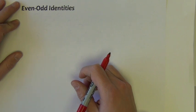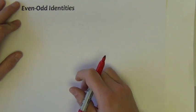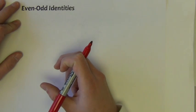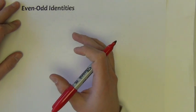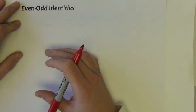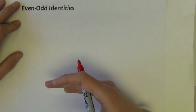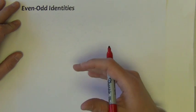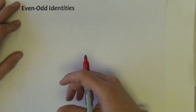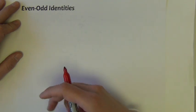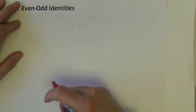Our last set of fundamental identities are called even-odd identities. I'm going to go ahead and give you the first one and then show with an example why that first one is true, and once you understand that, it would follow just as easily that the other five in this set are also true.